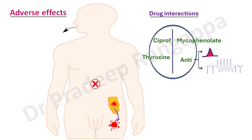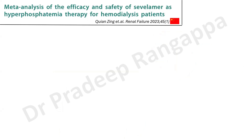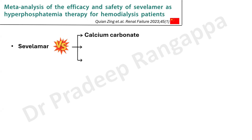The question is whether there is good evidence for substituting Sevelamer for older agents. Previously, calcium acetate or calcium carbonate were used to reduce phosphorus and increase calcium. There are trials comparing Sevelamer — a relatively newer drug — with calcium carbonate or acetate. A large meta-analysis from China examined the efficacy and safety of Sevelamer as hyperphosphatemia therapy. Most CKD patients are now on Sevelamer, so is that justified?